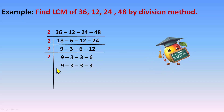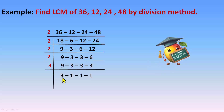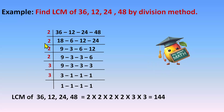No numbers remain in the 2 table, so move to the next prime number, 3. Now 9, 3, 3, and 3 all come in the 3 table: 9÷3=3, 3÷3=1, 3÷3=1, 3÷3=1. Divide by 3 once more: 3÷3=1, giving all ones. The LCM = 2 × 2 × 2 × 2 × 3 × 3 = 144.